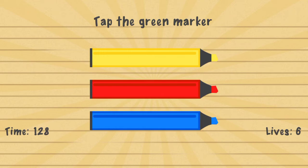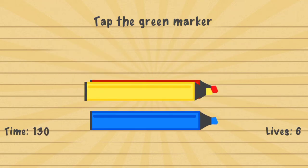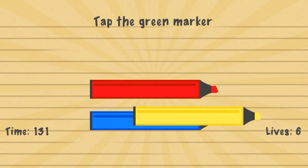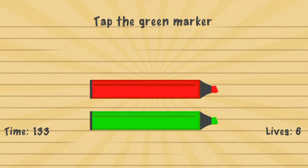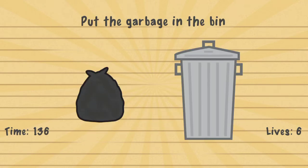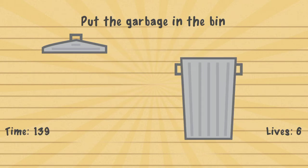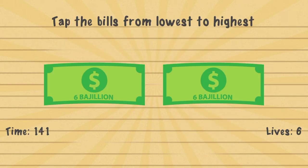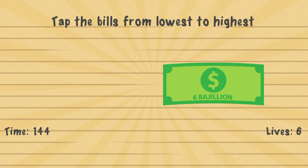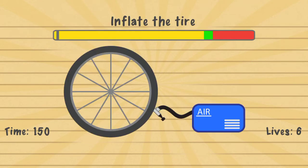Tap the green marker — you drag the yellow marker above the blue one and then tap it. Put the garbage in the bin — you remove the lid, drag the garbage in, then put the lid on top. Tap the bills from lowest to highest — you tap one of them, then you turn your device upside down, and then you tap it.